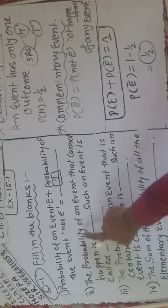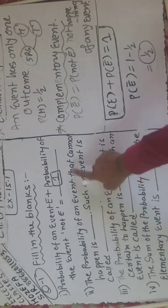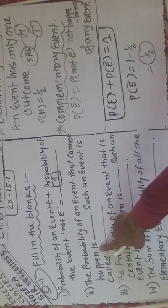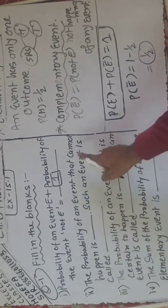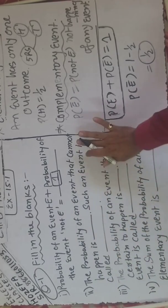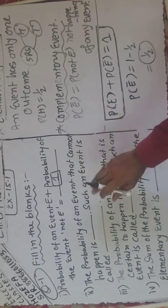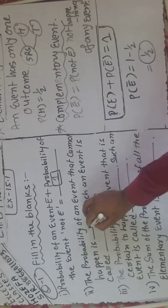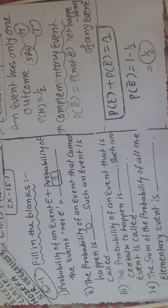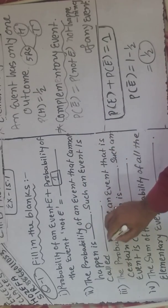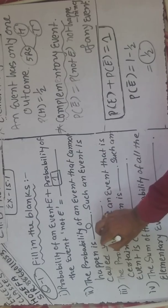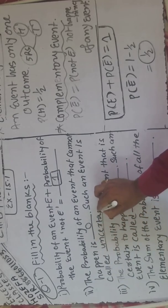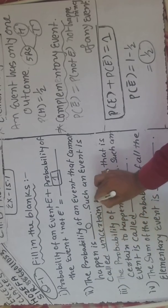Second fill in the blank: the probability of an event that cannot happen — peeche maine aapko samjhaya tha ke jo probability nahi hone ki, that is an uncertain event, that is an impossible event. Toh iski probability always kya hogi? Zero. And such an event is called an uncertain event.